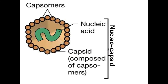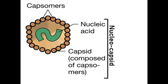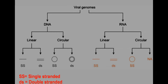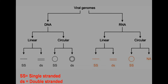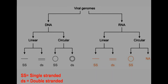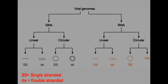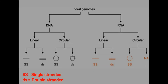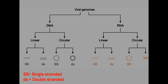Together, the viral genome and the capsid are known as the nucleocapsid. The whole infectious particle of a virus is called a virion. The nucleic acid of a virion is made up of either DNA or RNA, but never both. This DNA or RNA could be either single-stranded or double-stranded, and linear or circular.